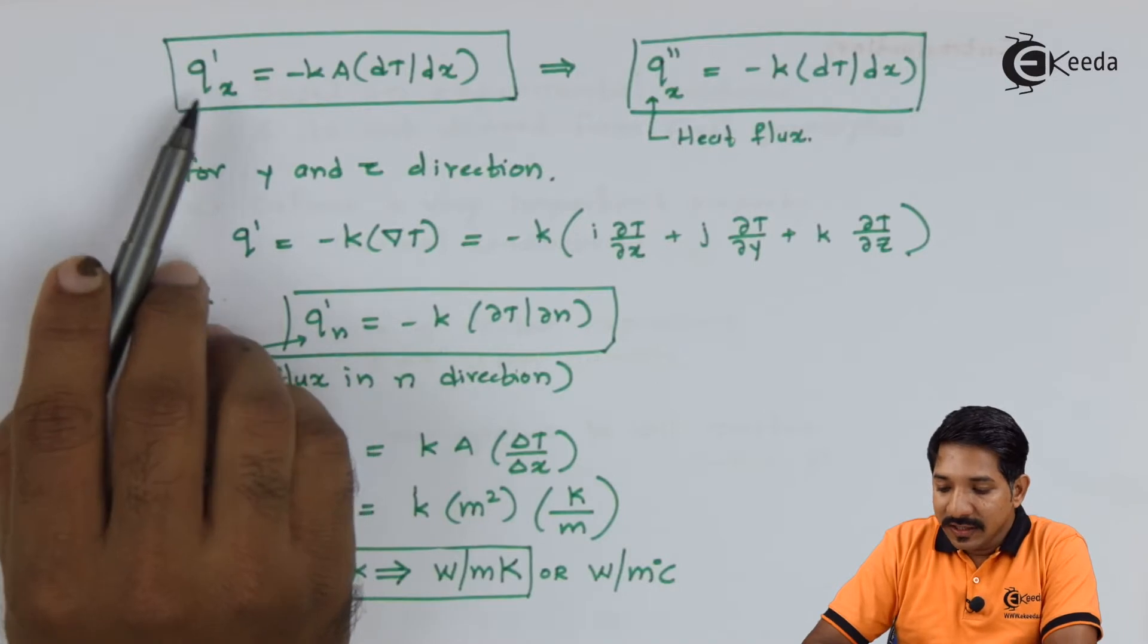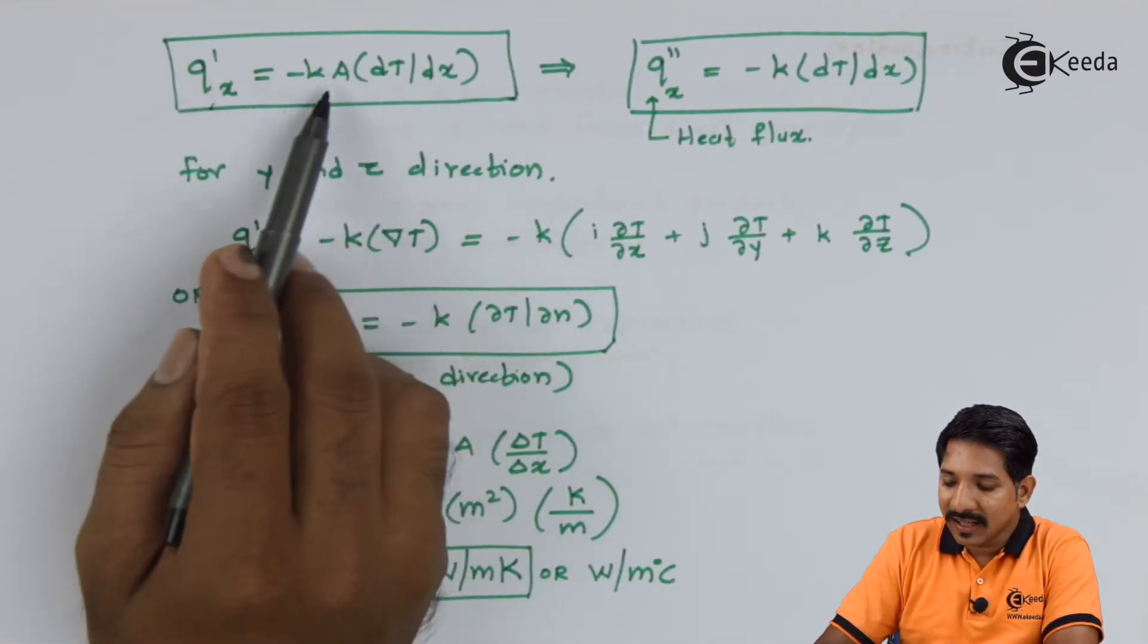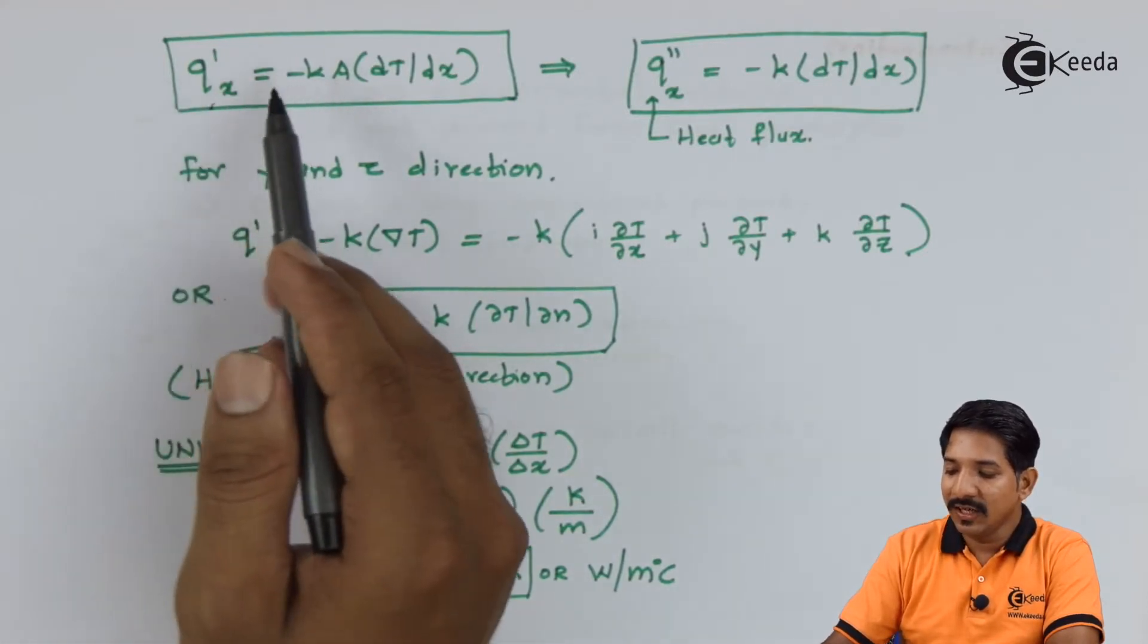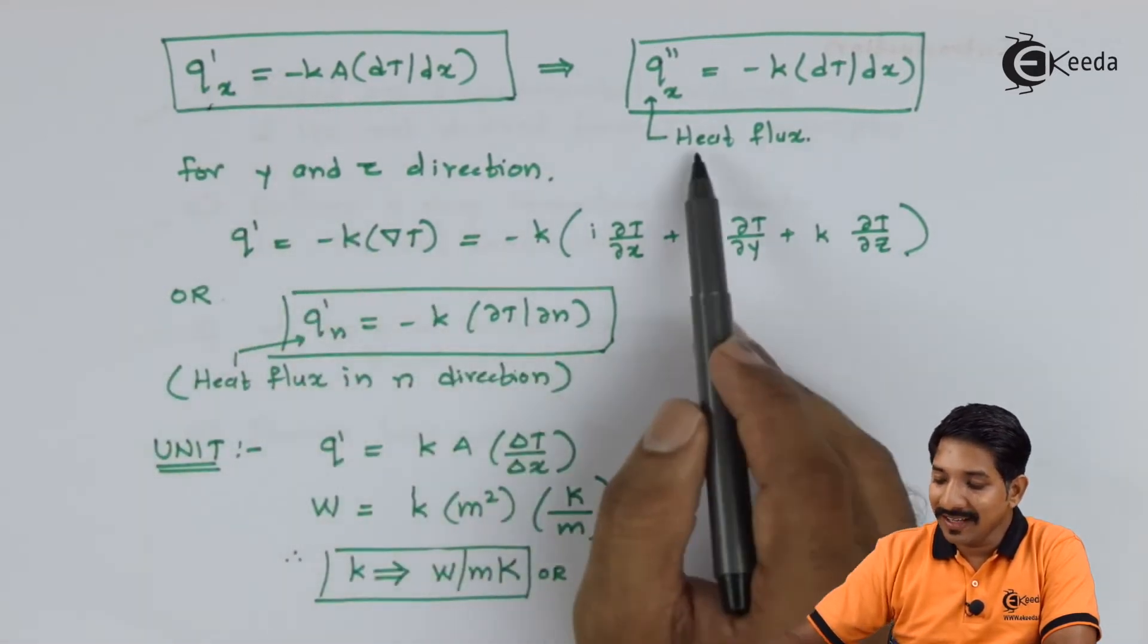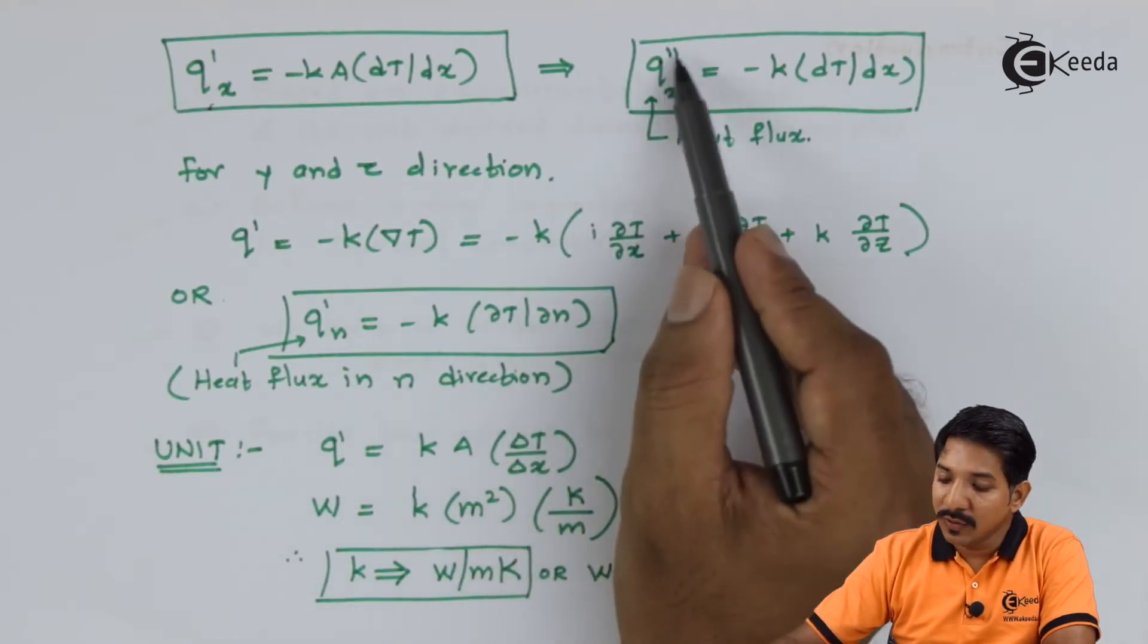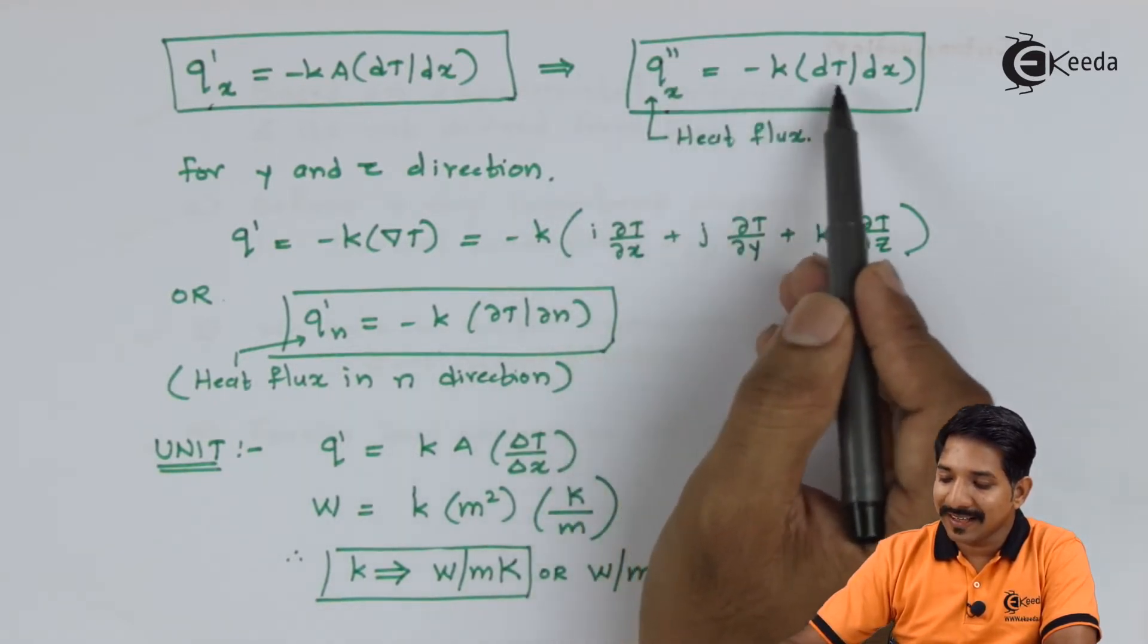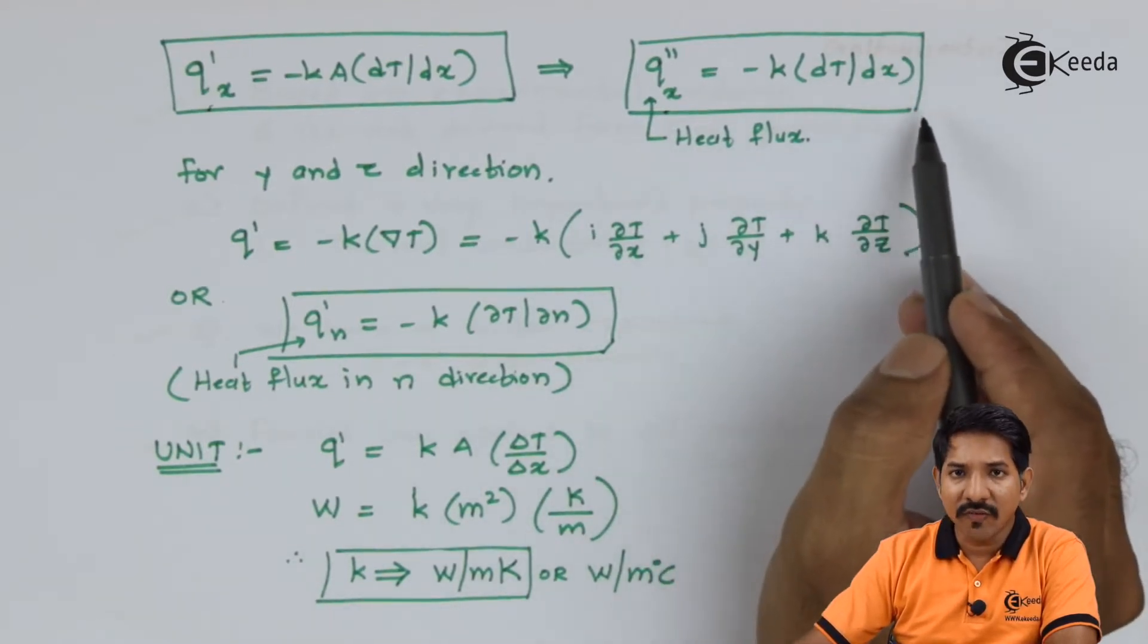Now as we have seen Q'x equal to minus KA dT by dx. If I take A to the left hand side what we have is Q'x upon A which is called the heat flux. And the nomenclature is Q''x. Now Q''x equal to minus K dT by dx.